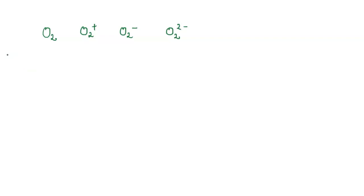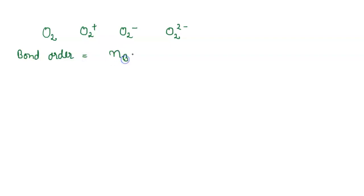First of all we write here the formula of bond order. Bond order equals the number of bonding electrons minus the number of anti-bonding electrons, divided by 2. This is the formula.